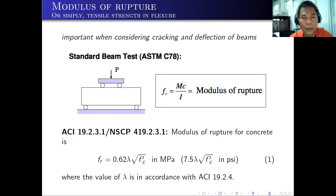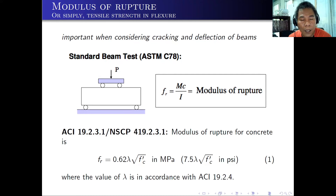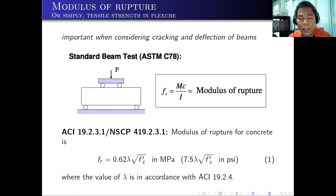Another method of determining the tensile strength is the modulus of rupture. We use the standard beam test, ASTM C78. The modulus of rupture is very important when considering cracking and deflection of beams. This is a four-point bending test with four loads applied at four points — two at the supports and two at the top. The modulus of rupture is defined as F sub R, which equals the moment M times C over I — the well-known flexure formula. According to ACI, the modulus of rupture for concrete is 0.62λ times the square root of FC prime in megapascal, or 7.5λ times the square root of FC prime in psi. This is higher than the split cylinder test value of 0.56.